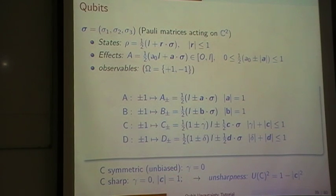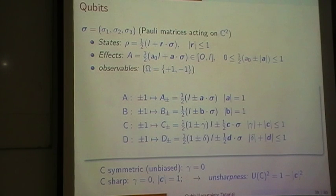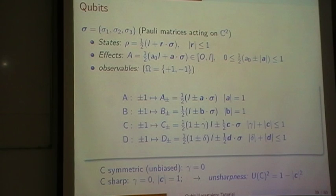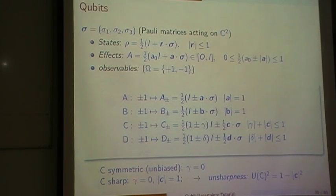There is a bit of ambiguity in the term 'unbiased' — I've spoken about unbiased approximations being those where the first moment of the approximator distribution equals the first moment of the target distribution. Here, unbiasedness refers to the fact that C-plus and C-minus do not favor the yes or no outcome when taking the trivial state of half the identity, which is completely neutral. C-plus and C-minus giving the same probabilities for that state requires gamma to be zero; otherwise there would be bias toward a yes or no answer depending on the value of gamma.